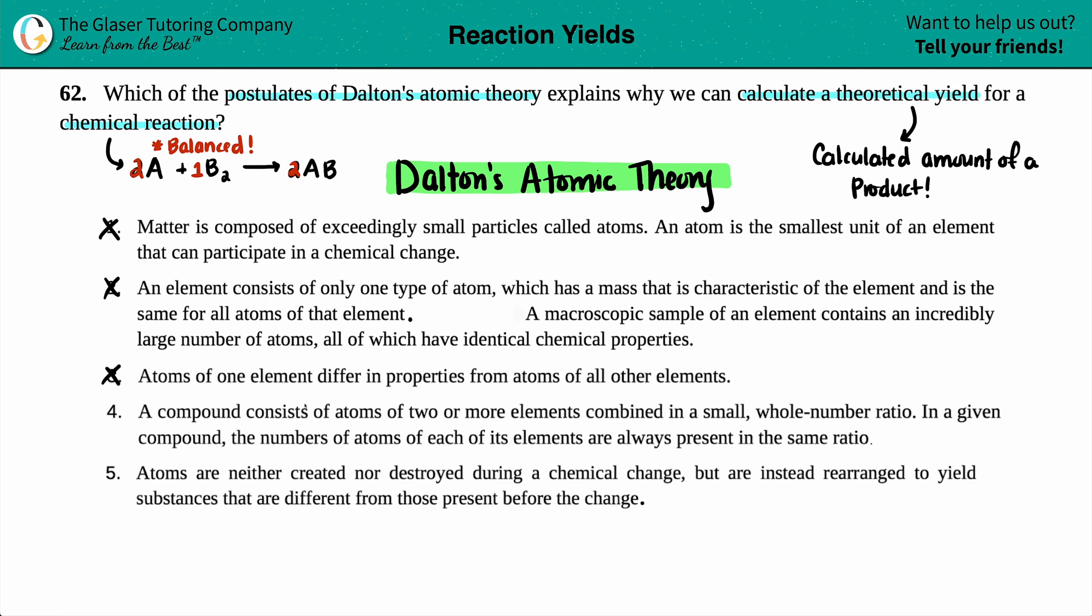Number four, a compound consists of atoms of two or more elements combined in a small whole number ratio. In a given compound, the number of atoms of each of these elements are always present in the same ratio.